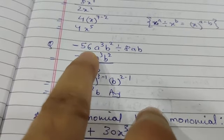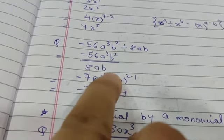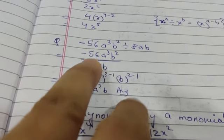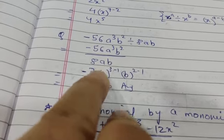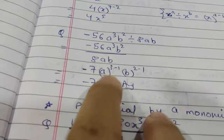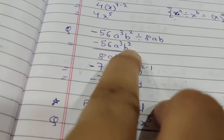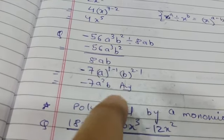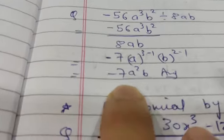In the same way, one more example: minus 56a cubed b squared upon 8ab. So 56 divided by 8 is 7 times, so minus 7 as it is. Then again law of indices exponent law. a to the power 3 upon a, b squared upon b. So minus 7 a squared b.